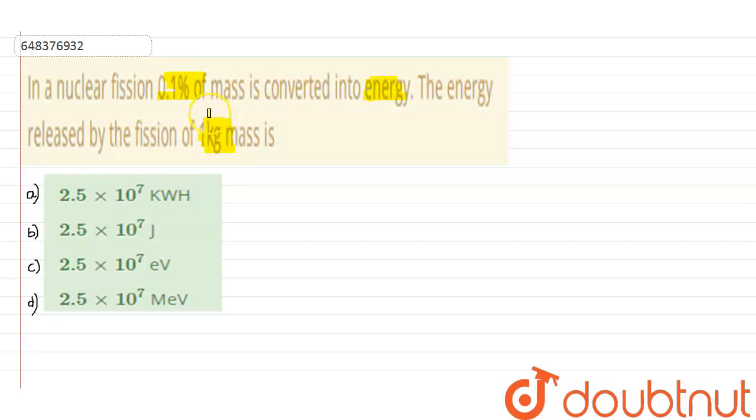We know that energy is nothing but E equals mass times velocity squared. So here the mass is given to me as 1 divided by 1000 because of 0.1 percent.